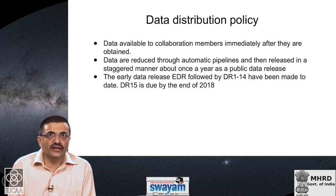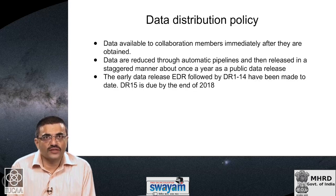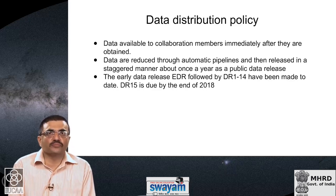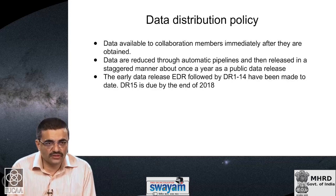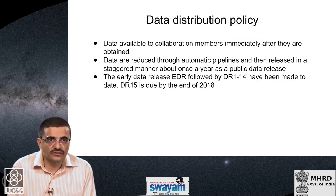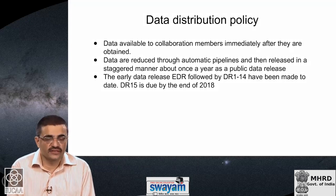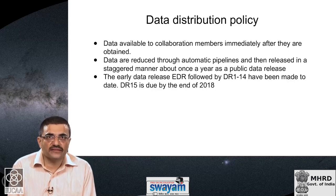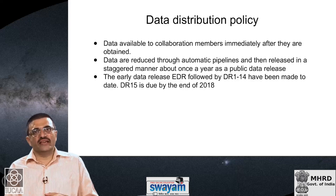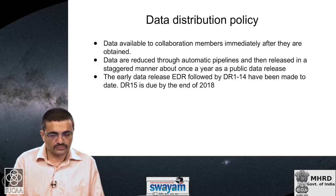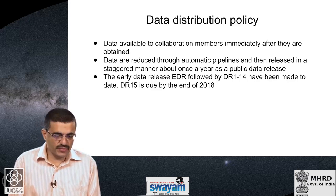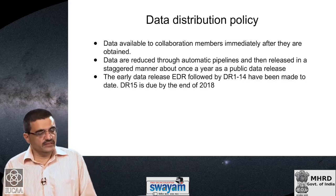The scientific returns from SDSS have been prodigious. As of July 2018, more than 8,000 papers had been published in the refereed literature, cited more than 400,000 times, with an h-index of 250. The survey has made discoveries in many scientific areas not originally planned for — asteroids, Kuiper belt objects, dwarf stars, and more. From the beginning, the SDSS adopted an extremely democratic and open data distribution policy. Data are reduced through automatic pipelines and released publicly about once a year. There have been data releases DR1 through DR14, and DR15 should be out by the end of 2018.